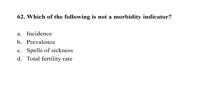Question number 62. Which of the following is not a morbidity indicator? Option A, incidence; Option B, prevalence; Option C, spells of sickness; Option D, total fertility rate. The correct option is D, total fertility rate.